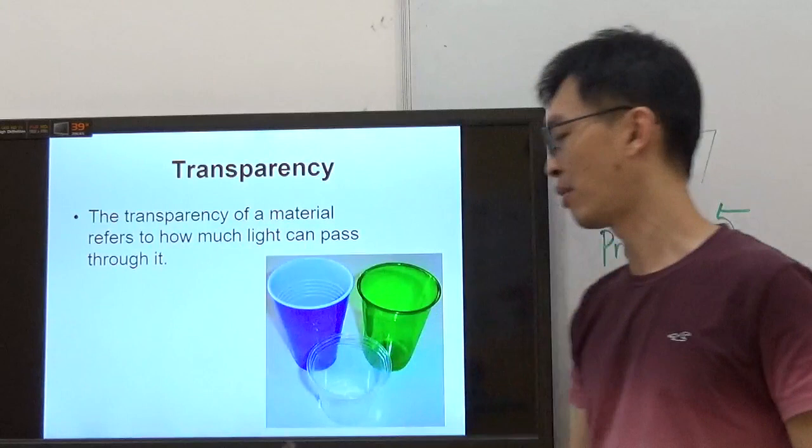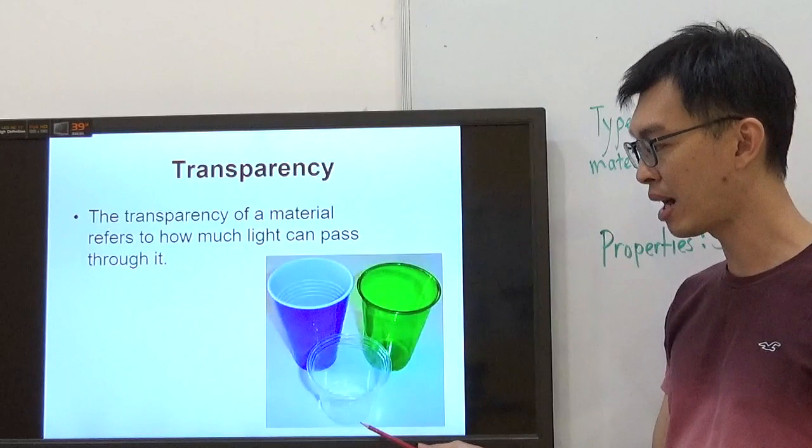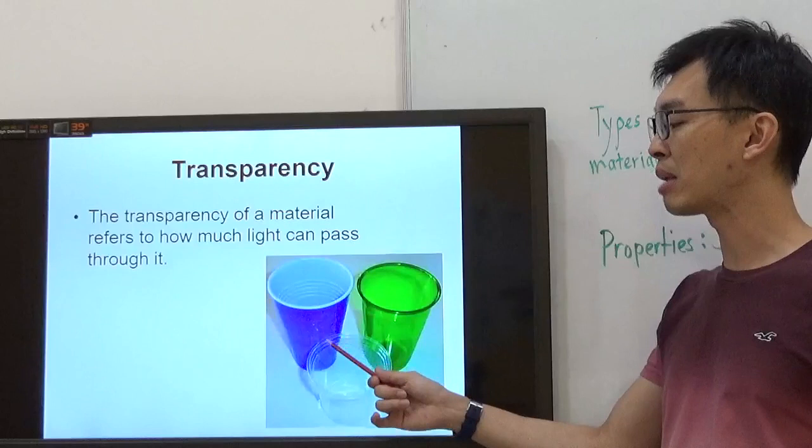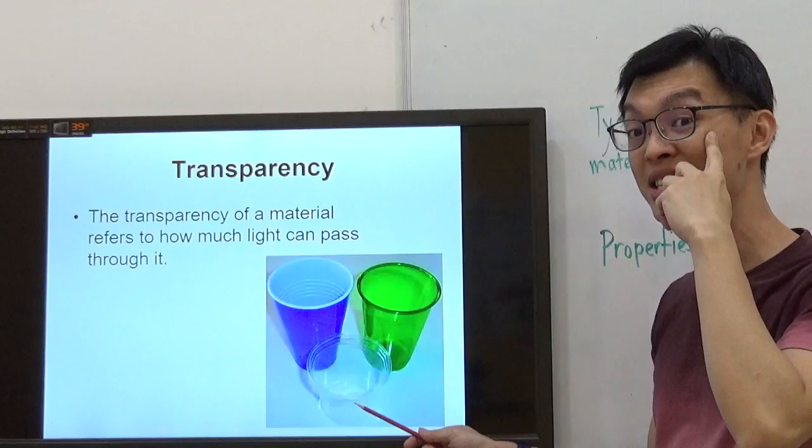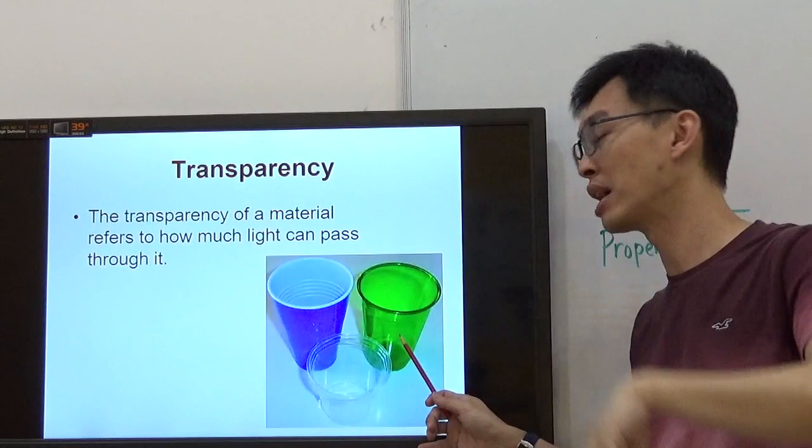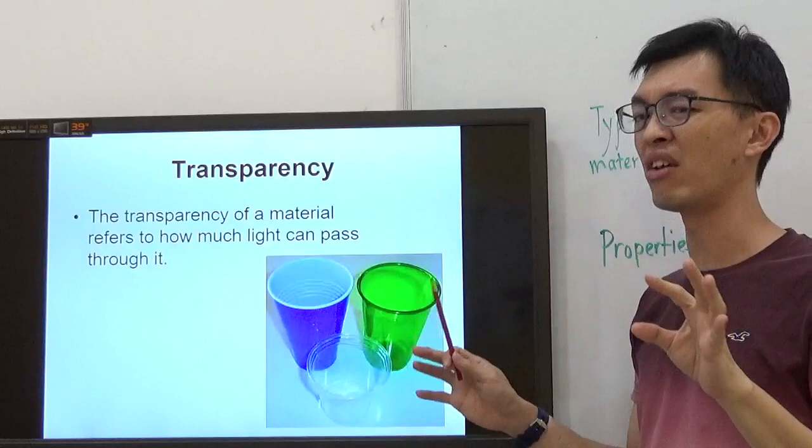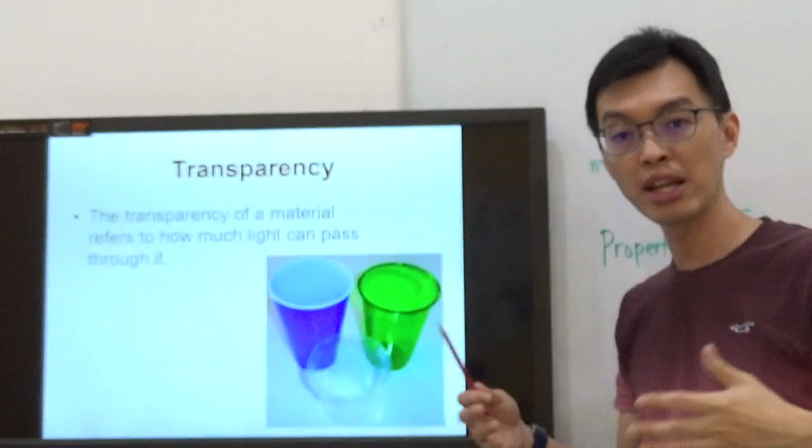We have three cups here. First cup is transparent, second cup is translucent, and the third cup is opaque. This one allows most light to pass through, so you could see through it. This one allows some light to pass through, so you could see through but not very clear. This one doesn't allow any light to pass through, so you couldn't see what is inside the cup.